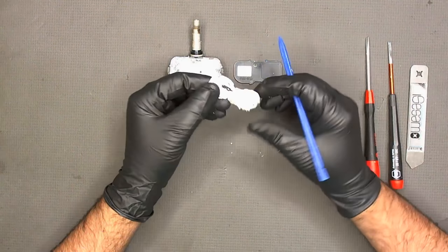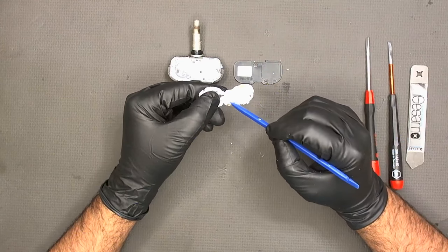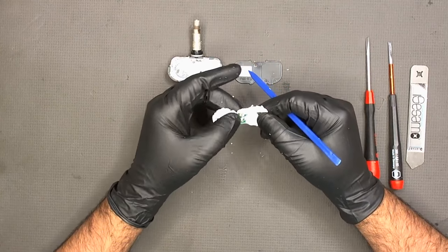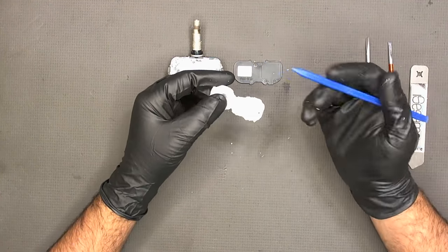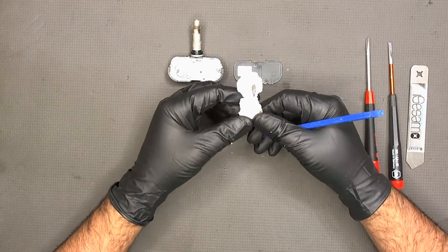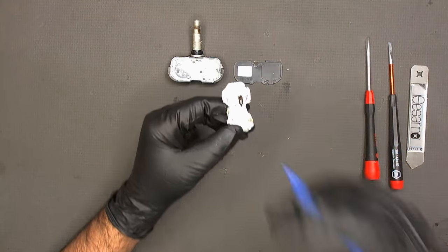Now what we need to do is make sure that we clean up this part where the battery is actually soldered to the circuit board. I'm using a plastic tool to make sure that I do not damage the board in any way. So let's clean it up.